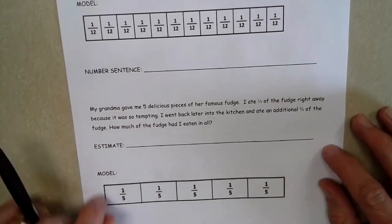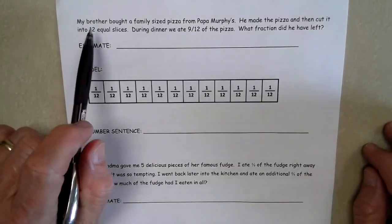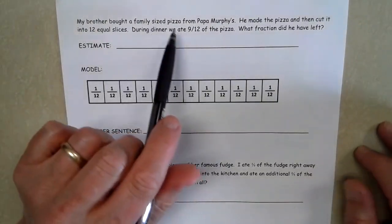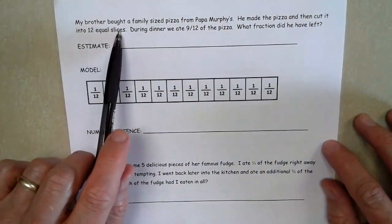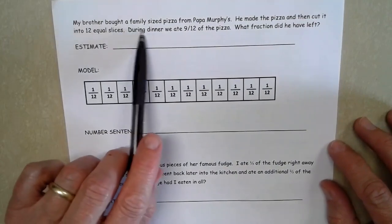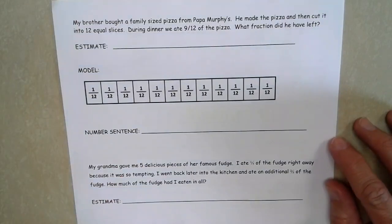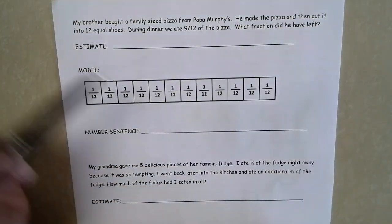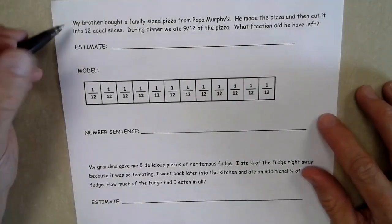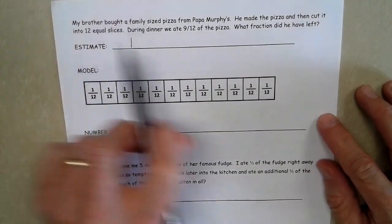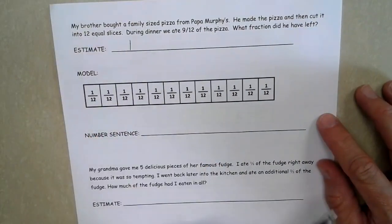On the back side, we have our brother buying a family-sized pizza from Papa Murphy's. He made the pizza and then cut it into 12 equal slices. During dinner, we ate nine twelfths of the pizza. What fraction did we have left? Okay. So if I look at this, we're starting with the whole pizza because it said he made the pizza and cut it into 12 slices. We have 12. That's the whole pizza.